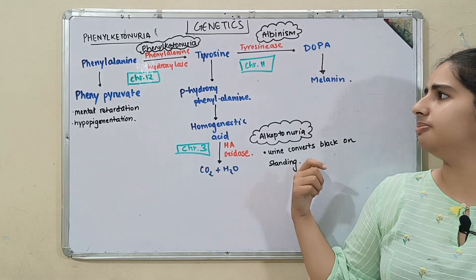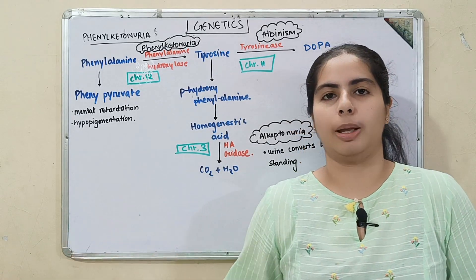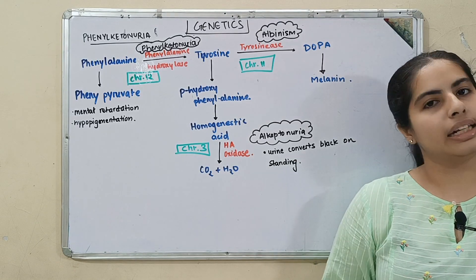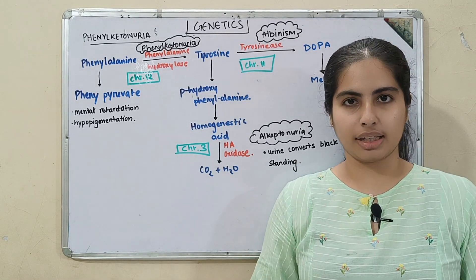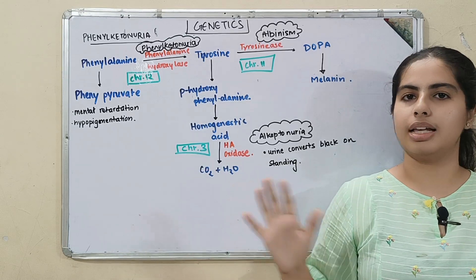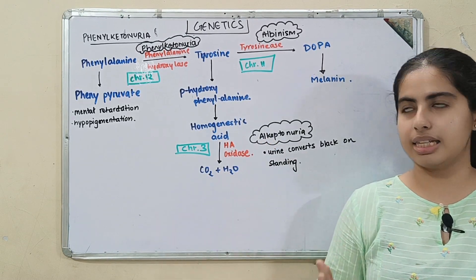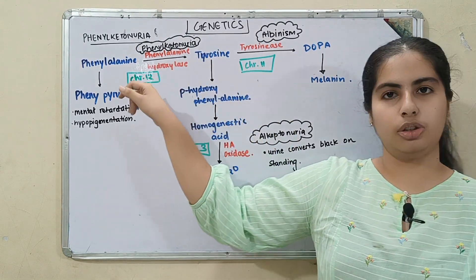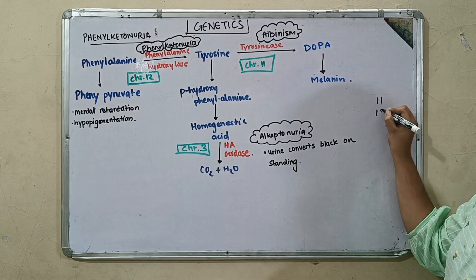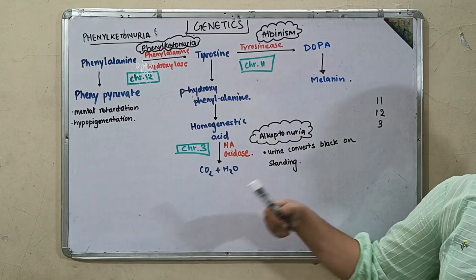For chromosome numbers, remember: 11, 12, and 3 — using the trick that 2 plus 1 is 3. So phenylalanine hydroxylase is on chromosome 12, tyrosinase on chromosome 11, and homogentisic acid oxidase on chromosome 3. Write these down and remember them.